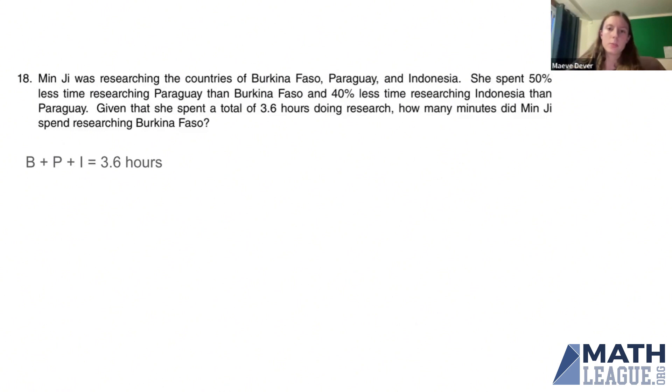Also, we need some variables. We need a variable for Burkina Faso, Paraguay, and Indonesia, and those all start with different letters. So, let's say they add up to 3.6 hours. B plus P plus I is 3.6 hours.